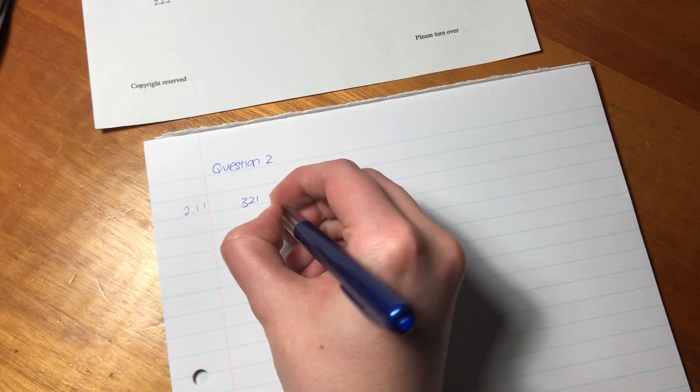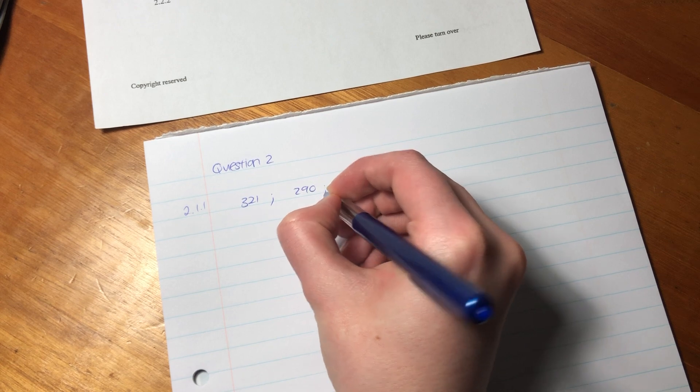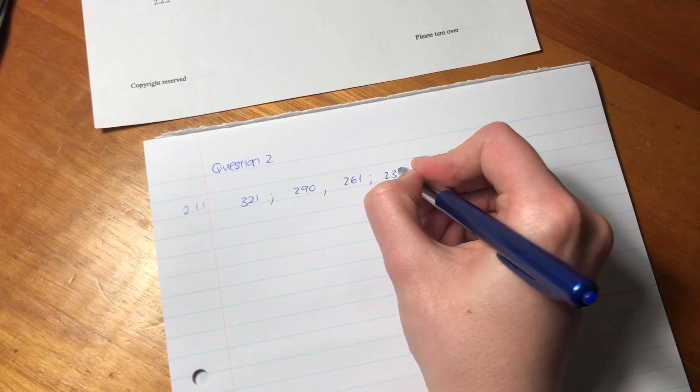Let's just jump in and do the first question. So, question 2.1.1. It says, write down the values of the next two terms. So, let's just write down the terms that we have. So, 3, 2, 1. 2, 6, 1, 2, 3, 4.